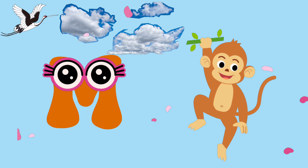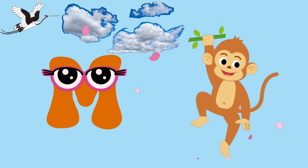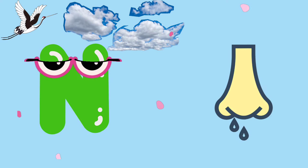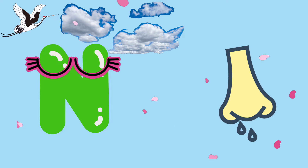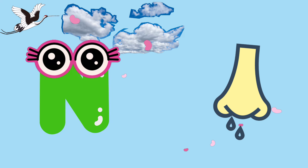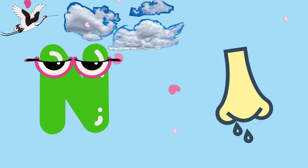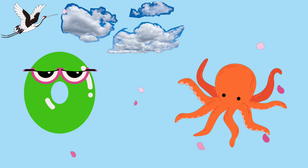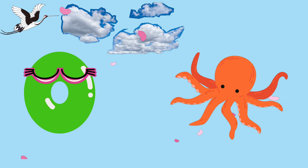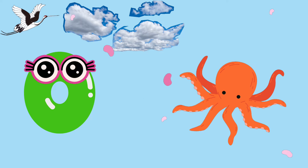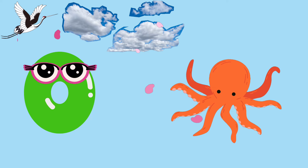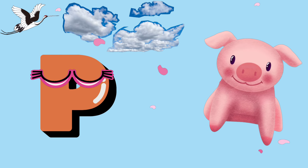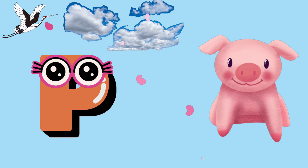M is for monkey, monkey. N is for nose, nose. O is for octopus, octopus. P is for pig, pig.